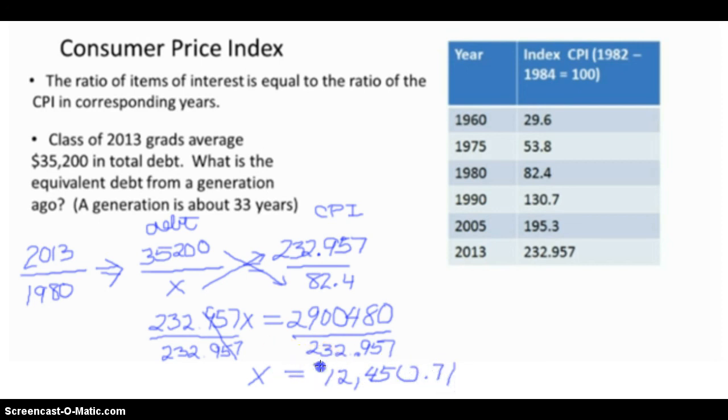And so what that number is, it's the equivalent debt back in 1980. Equivalent to $35,200 in 2013 would be a debt of $12,450.71 in 1980.